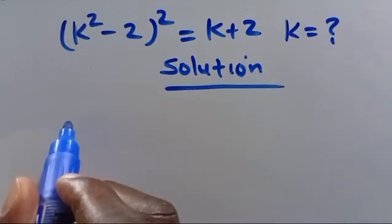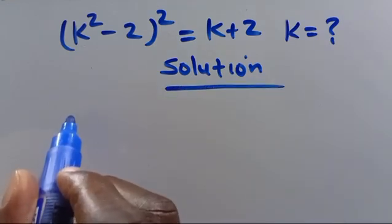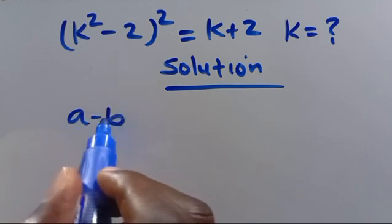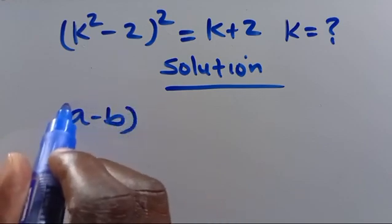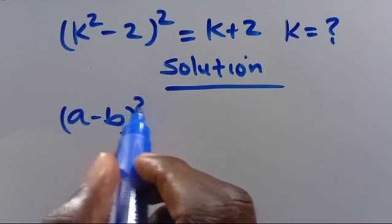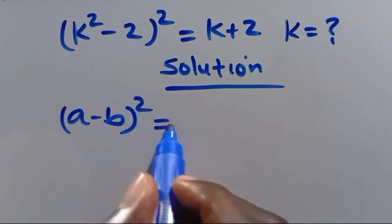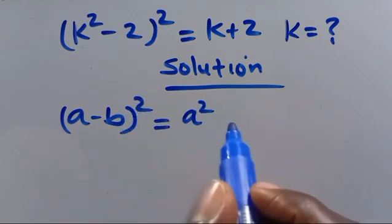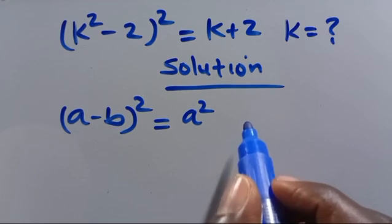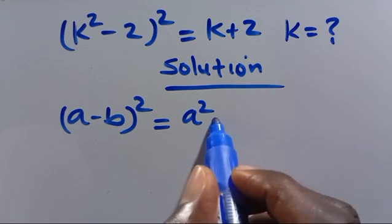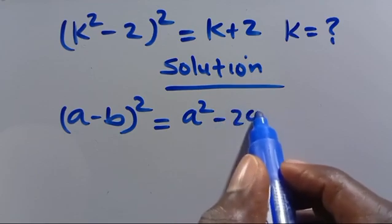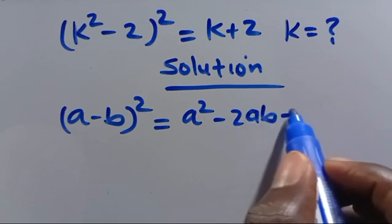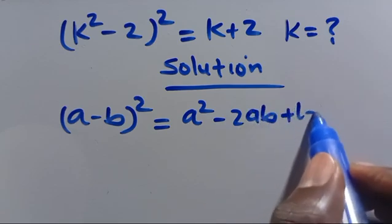To solve this, recall that (a - b)² equals a² minus 2ab plus b².